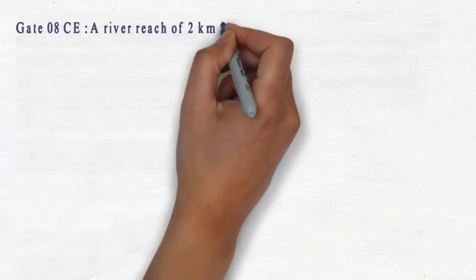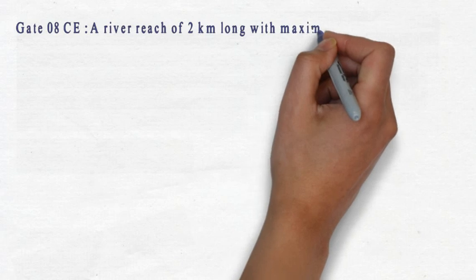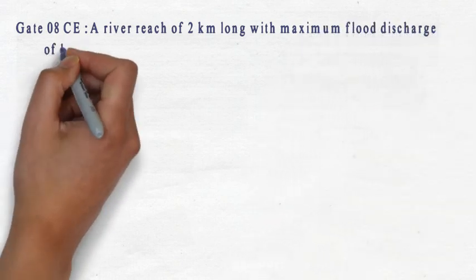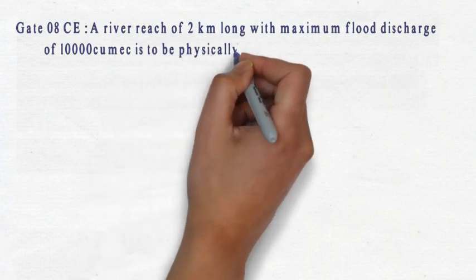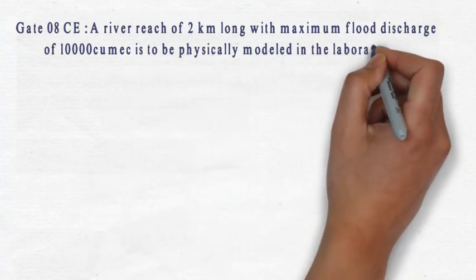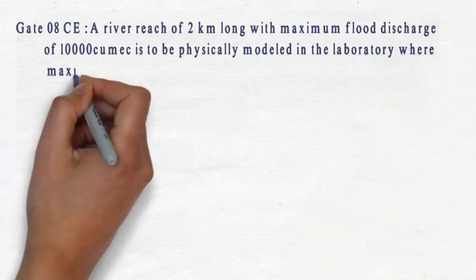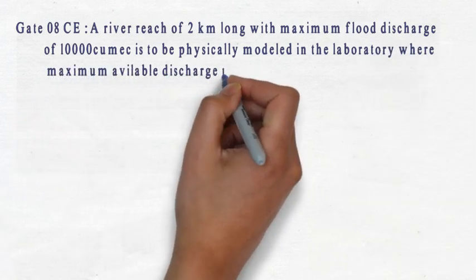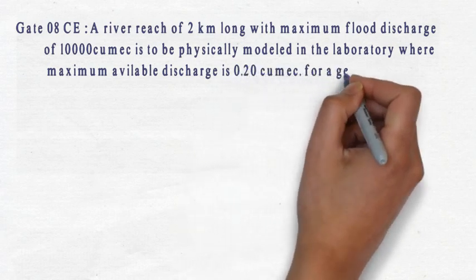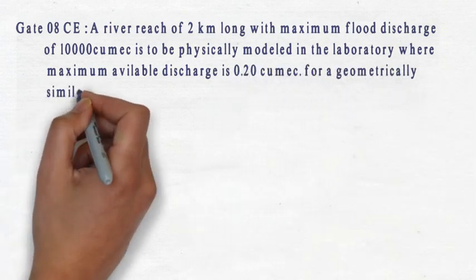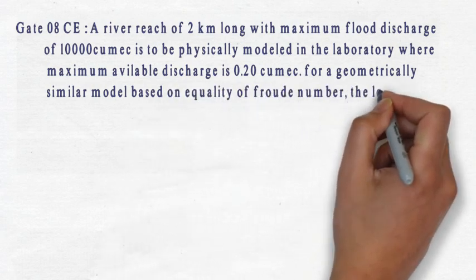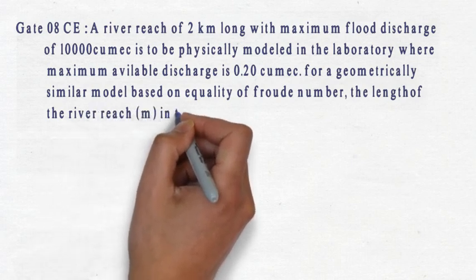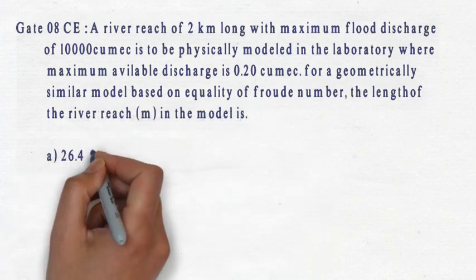Let us apply this trick and solve a question. This is a question from GATE Civil Engineering 2008. A river reach of 2 km long with maximum flood discharge of 10000 cumec is to be physically modeled in the laboratory where the maximum available discharge is 0.2 cumec. For a geometrically similar model based on the equality of Froude number, the length of the river reach in meters of the model is. So they are asking you the length of the model.